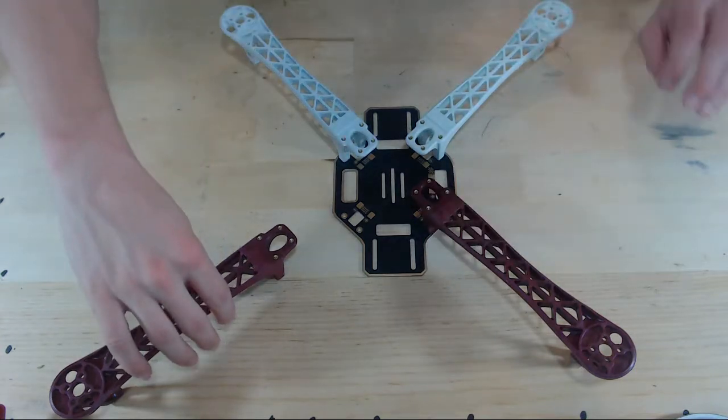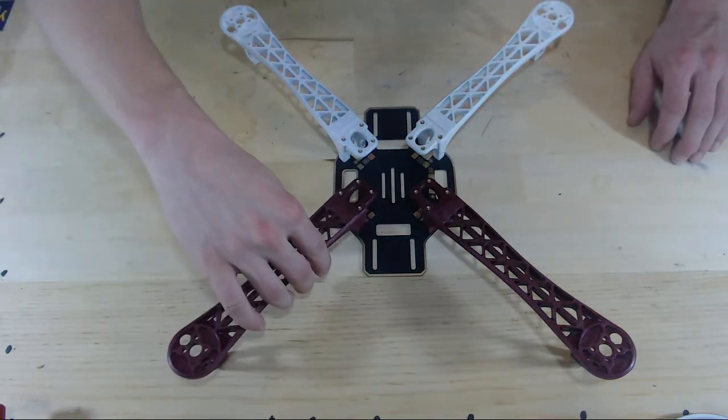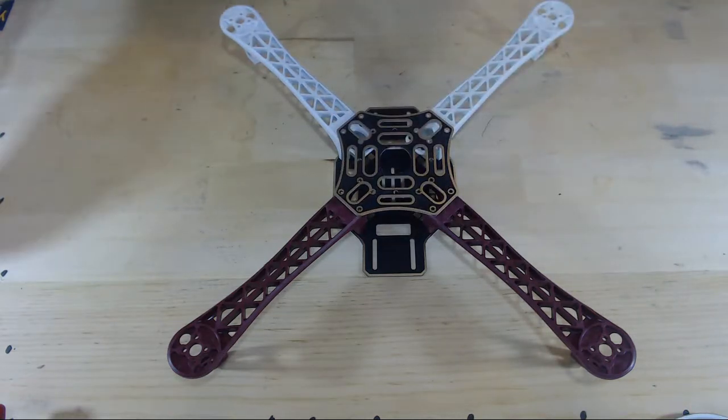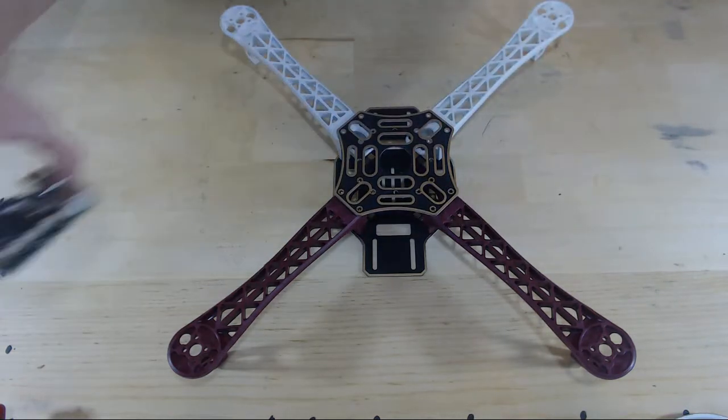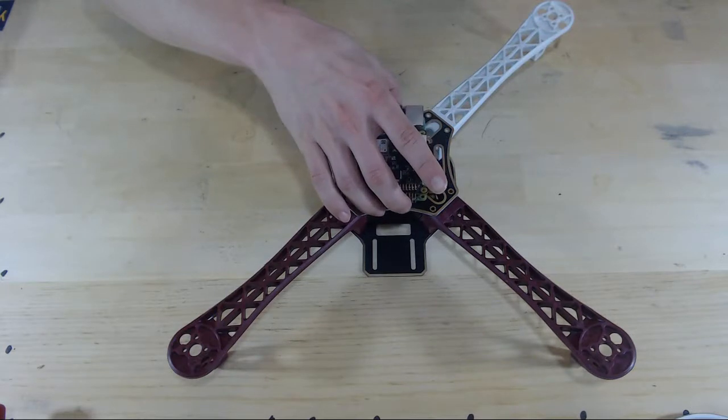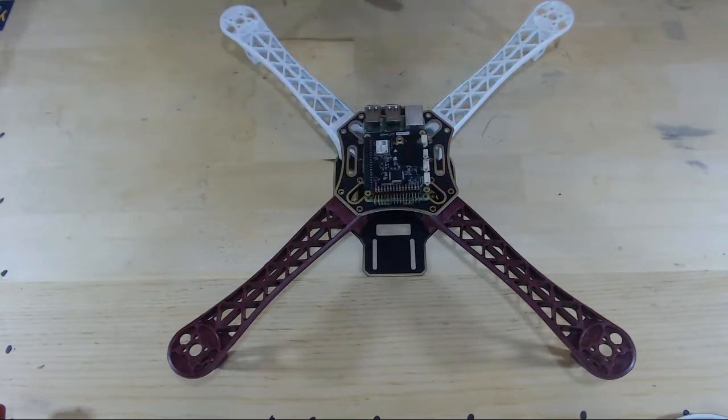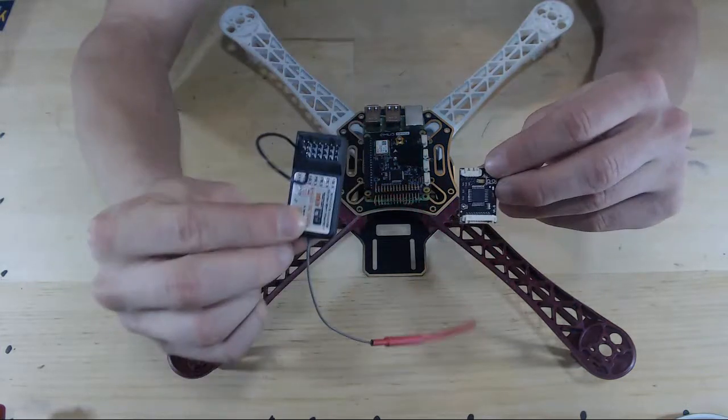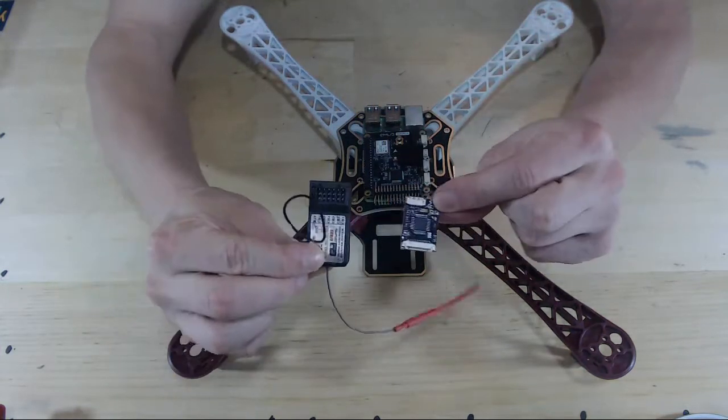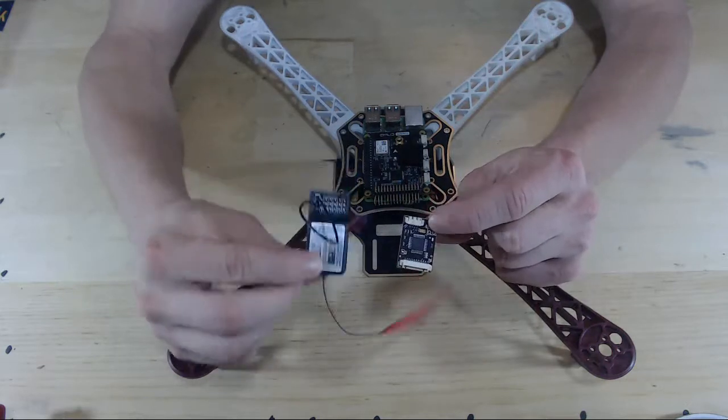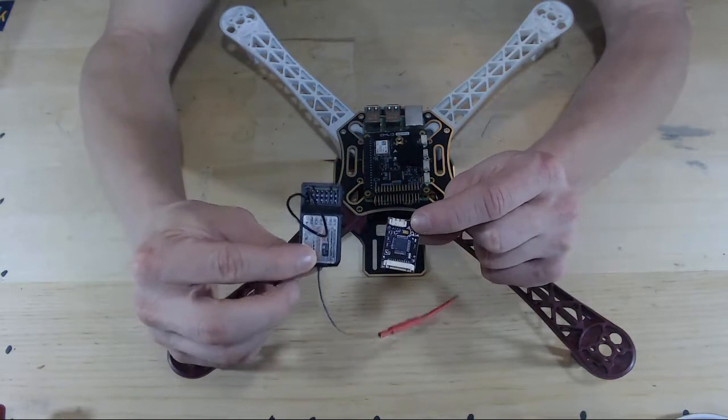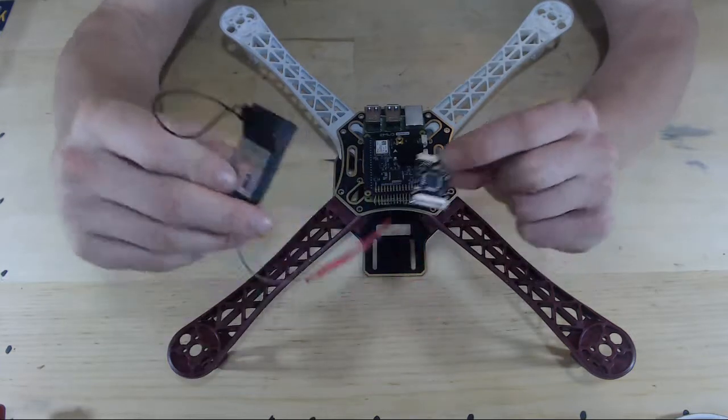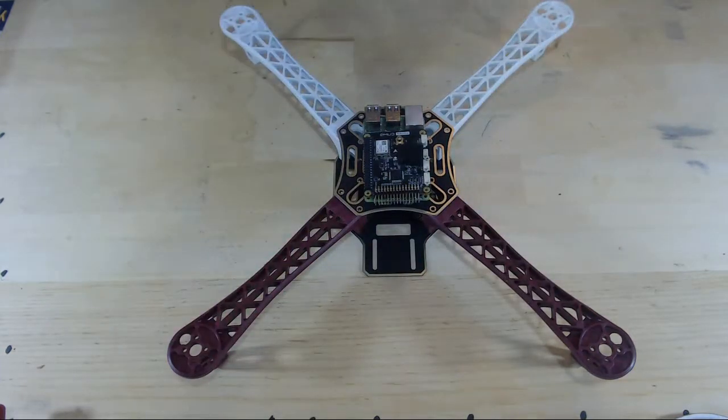The next decision might be where to place our RC input and our PPM encoder. Let's replace our flight controller. Now we need to know where we're going to put our RC module and our PPM encoder. These things need to be close to each other because the RC input is going to be connected to the PPM encoder via a wire connection. With that in mind,